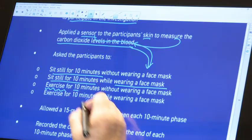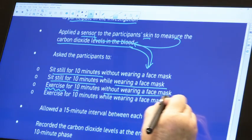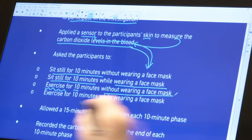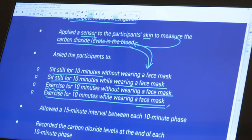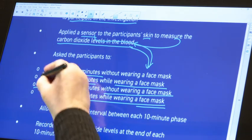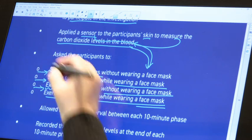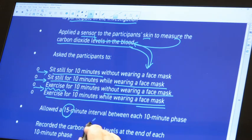Thirdly, exercise for 10 minutes, maybe walk up and down a step or something, skip, something to be replicating us going about our normal work during the day. Exercise 10 minutes without wearing a face mask, and then the same thing with wearing a face mask. In between each of these steps, they allowed a 15-minute interval.